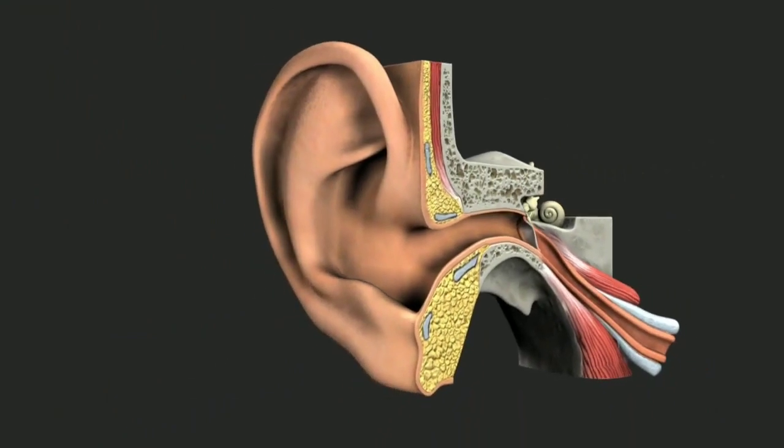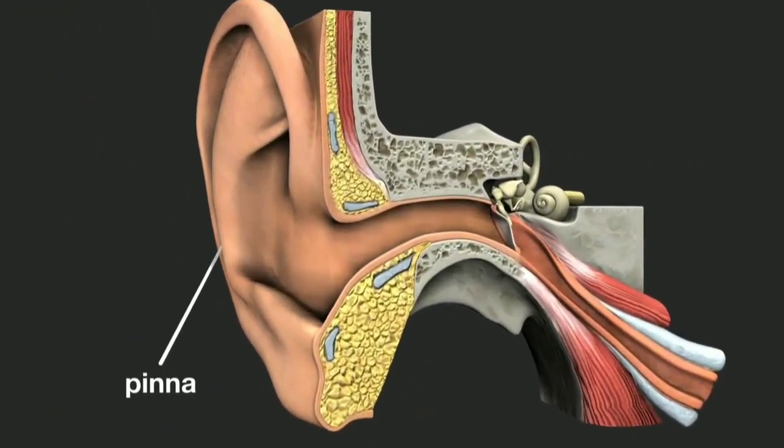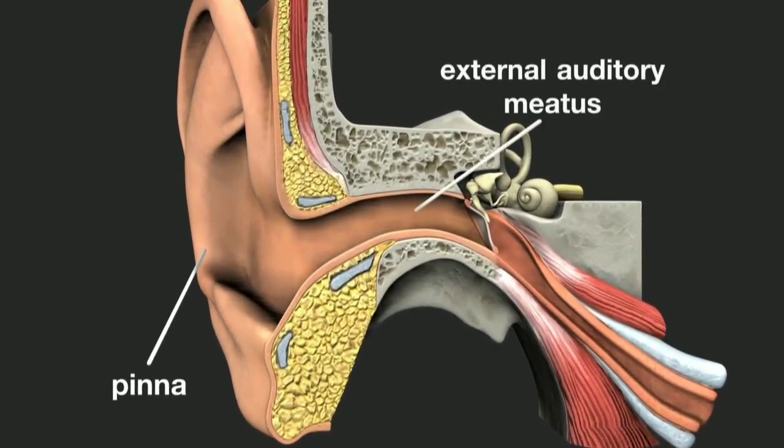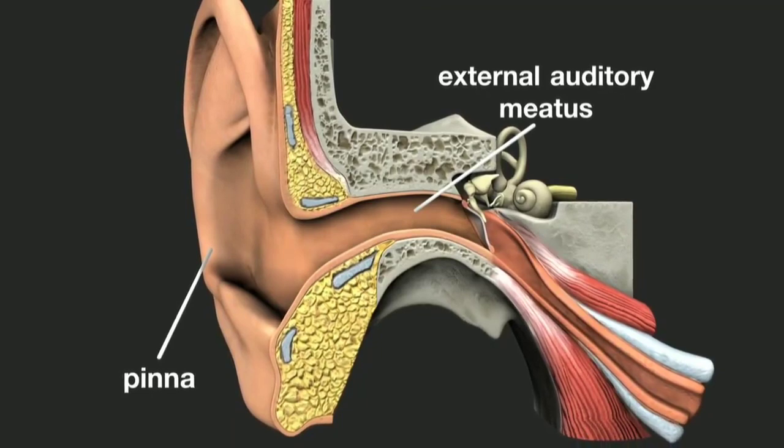The outer ear consists of the pinna, which serves as protection for the delicate inner parts of the ear, and the external auditory meatus, the ear canal, which collects sound and directs it towards the eardrum.